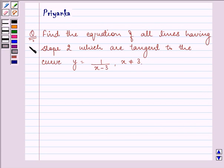Hello and how are you all today? The question says find the equation of all lines having slope 2 which are tangent to the curve y equals 1 over x minus 3, where x is not equal to 3.